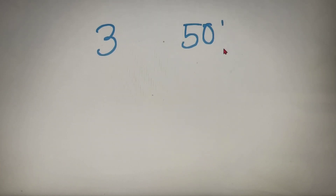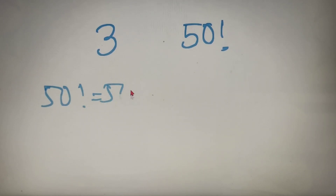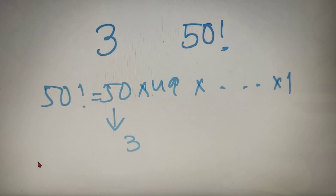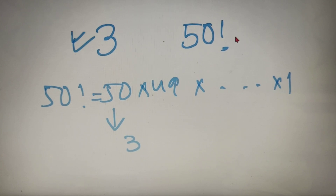That was a pretty simple case. Now if I tell you to find the highest power of 3 in 50 factorial, this is not as simple, because 50 factorial equals 50 × 49 × ... × 1, and writing down all the powers of 3 in each number is not easy. So for this, we will learn a very simple method by which we can calculate the power of any number in any large factorial.